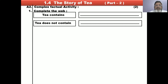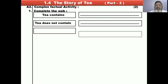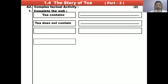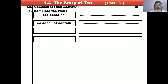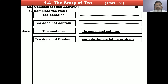What can we get from tea and what can we not get from tea? Tea contains theanine and caffeine. Tea does not contain carbohydrates, fat, or proteins.